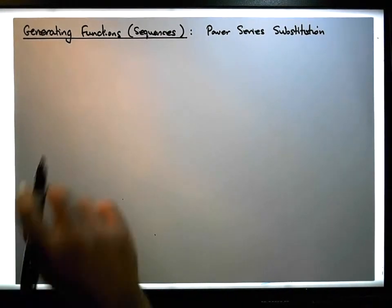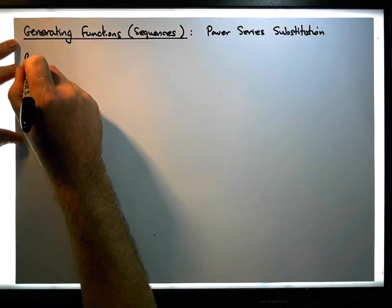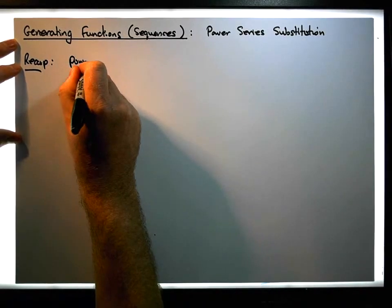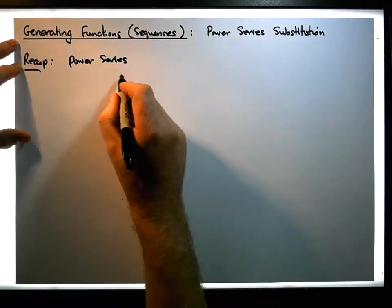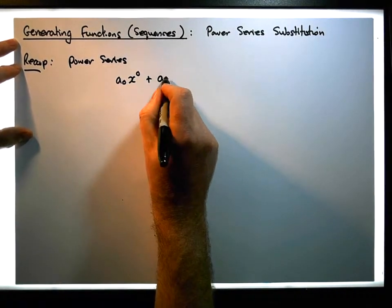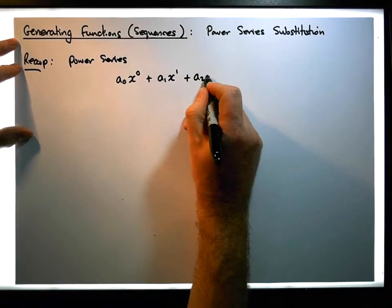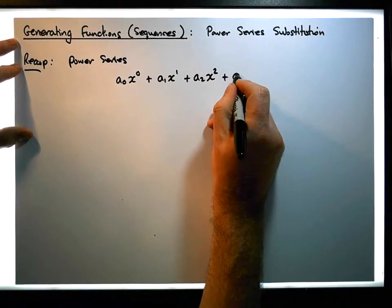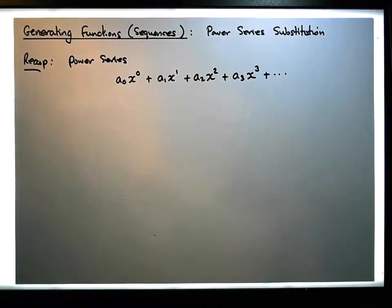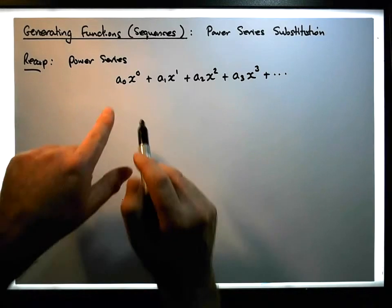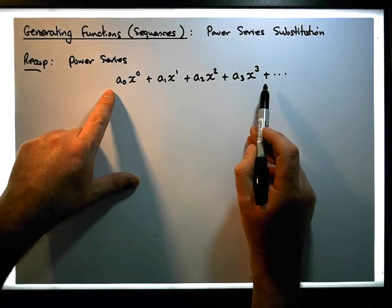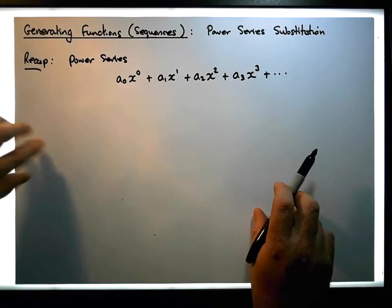Let's just recap a power series. In general it looks something like this: a-zero times x to the zero, plus a-one times x to the one, plus a-two times x to the two, plus a-three times x to the three, and so on. It's an infinite power series, and we're going to use these power series to represent or encode a particular sequence within them.